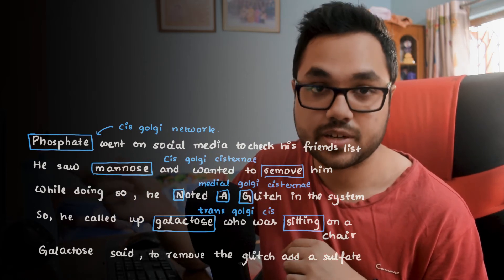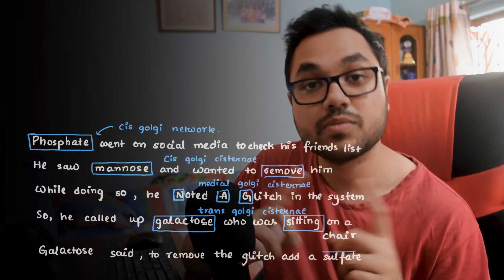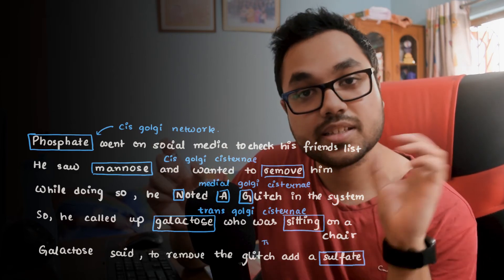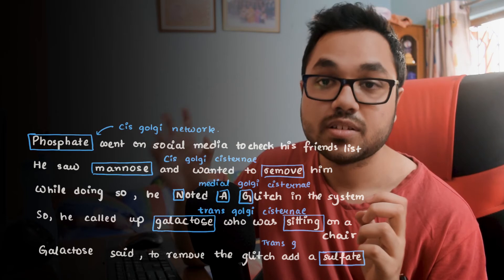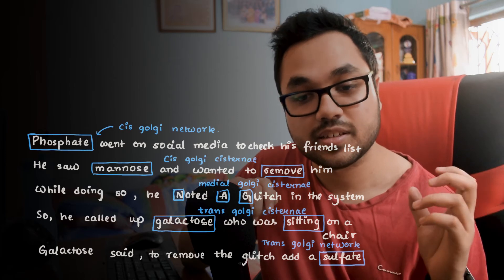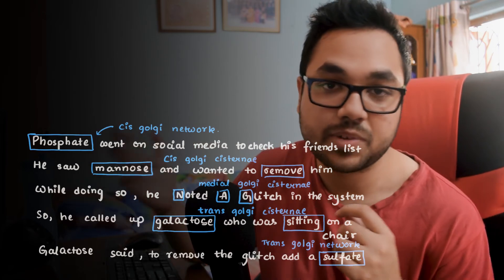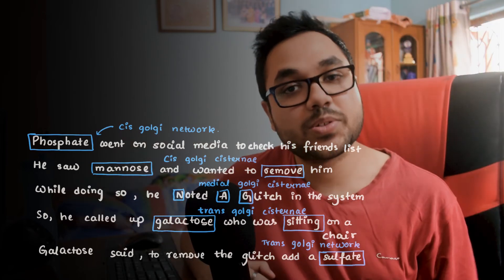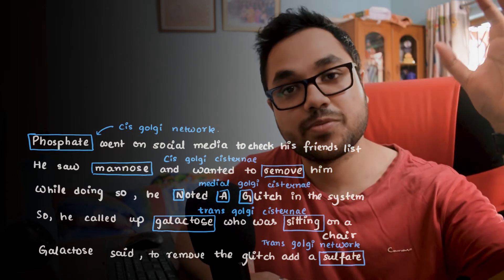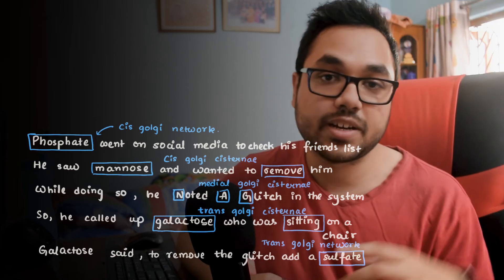Then comes the trans cistern compartment, where Galactose was sitting on a chair — so galactose is added, and 'sitting on a chair' translates to sialic acid, so both sialic acid and galactose are added in the fourth compartment. Finally, in the fifth compartment, as Galactose said to add a sulphate, sulfation occurs. Through this whole story you remember every event going on inside the Golgi apparatus, from the cis-Golgi network all the way to the trans-Golgi network.